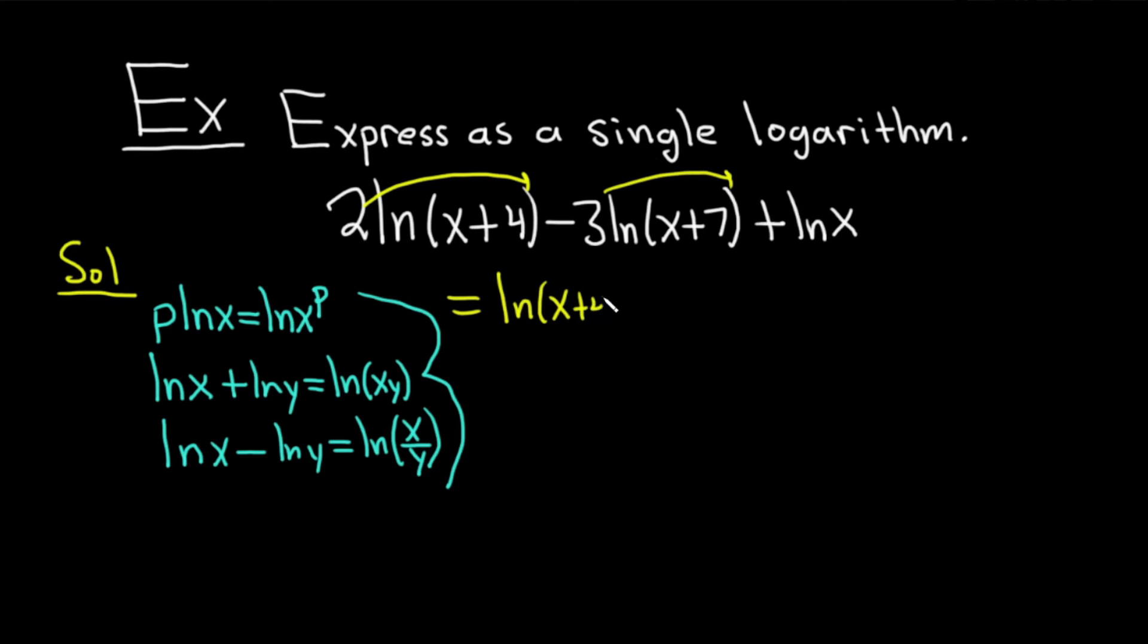minus ln(x+7)^3. And then this ln(x) just kind of hangs out there. It's just, we didn't really do anything with that.